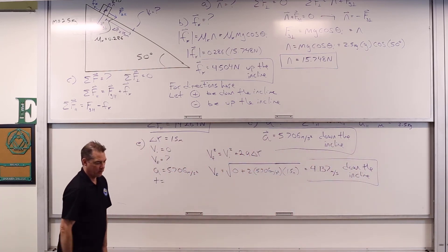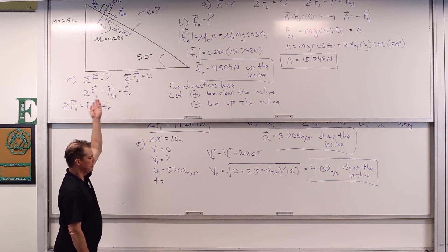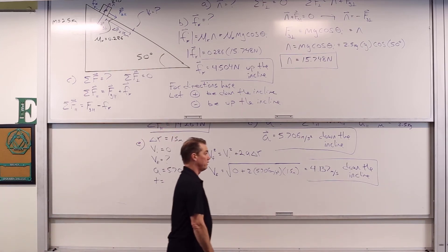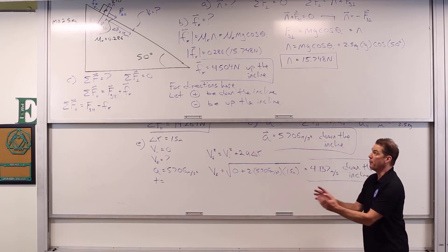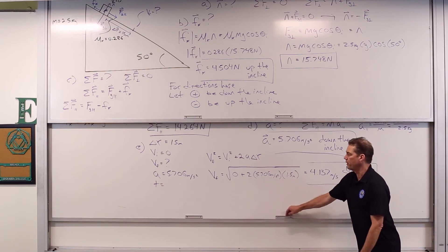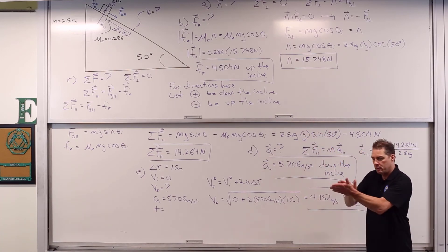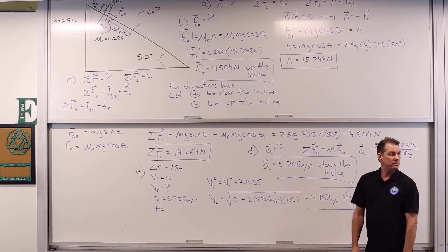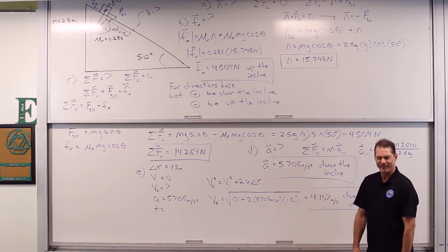Once we know what the net force is, we can figure out anything about the object's motion. This was just the case of an object released from rest sliding down the incline, but we could also push it up the incline, give it a shove going up, or push it faster down the incline. That's our friend the incline, but now we've added friction to it. Have a good one, take care.